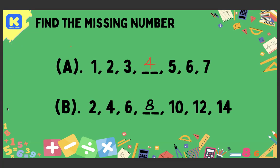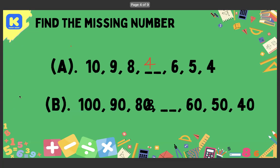Let's see if you can do these ones. We have 10, 9, 8, then an empty space, then 6, 5, 4 — what comes here? It's pretty obvious: 7. Now for part b, we have 100, 90, 80, then a blank, then 60, 50, and 40. Pause and do it. Yes, 70 is correct! We've now completed four fill-in-the-blank sequence questions.